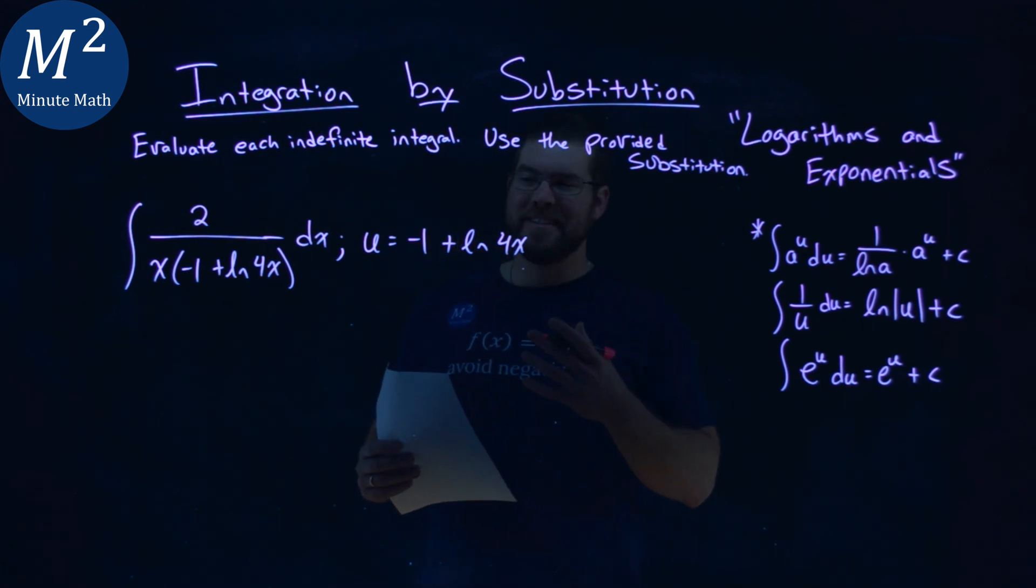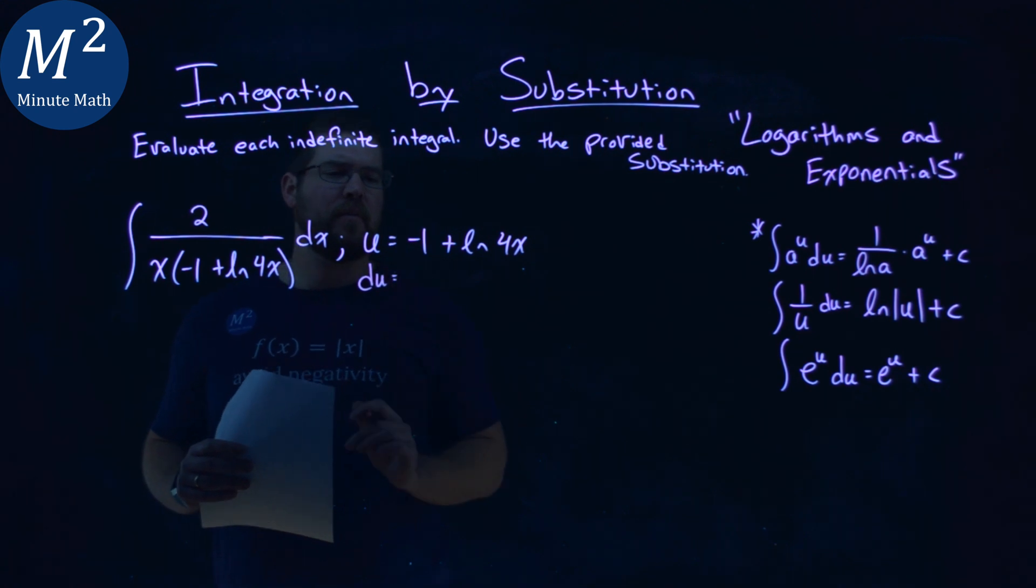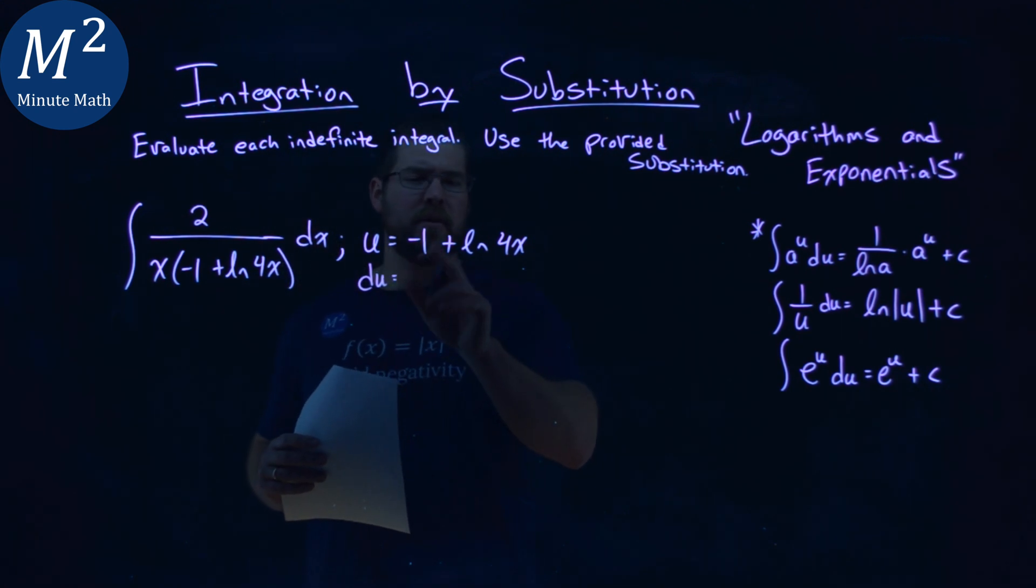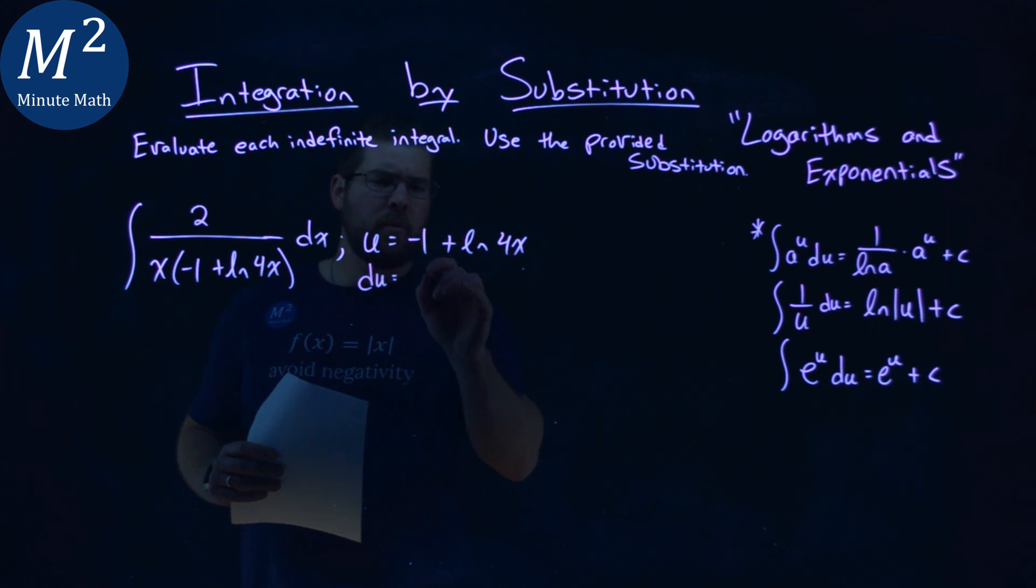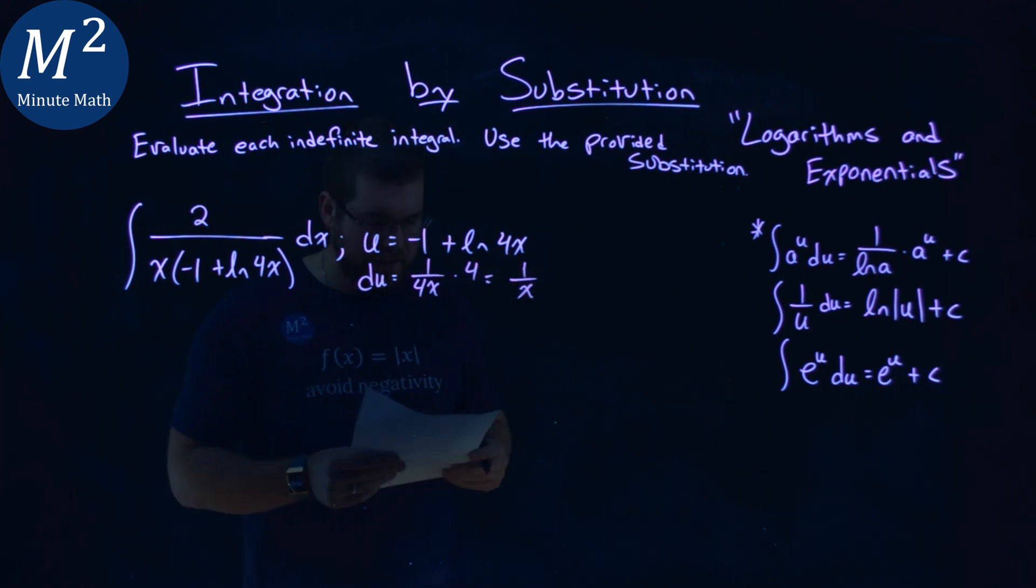First thing I want to do here is find my du. So the derivative of our u value, negative 1, don't worry about that, natural log of 4x. Well, that's going to be 1 over the inside, 4x, times the derivative of the inside, which is 4. The 4s cancel, and we just have 1 over x. Not too bad.